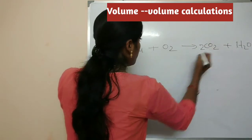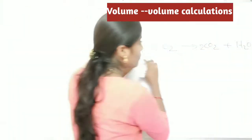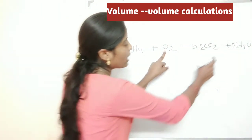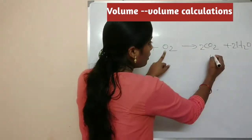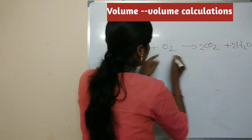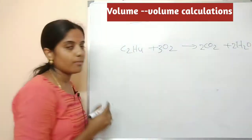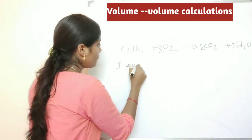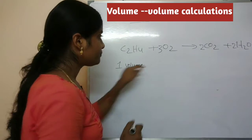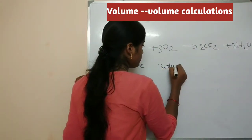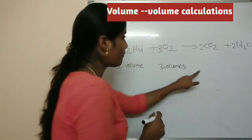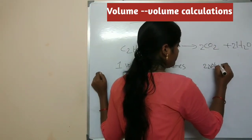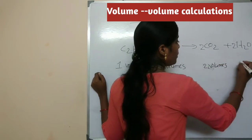Balancing the ethyne equation: carbon is 2 on the left, 1 on the right; hydrogen is 4 on the left, 2 on the right, so we place a coefficient of 2. Checking oxygen: 2 becomes 4, then 3 becomes 6 — so the equation is balanced. In volume terms: 1 volume of ethyne reacts with 3 volumes of oxygen to form 2 volumes of carbon dioxide and 2 volumes of water.